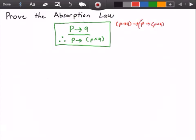Or another way of writing it is P implies Q is logically equivalent to P implies P and Q, if P implies Q is true.